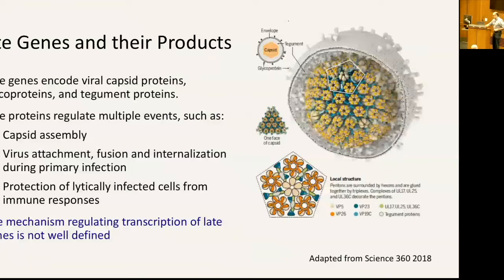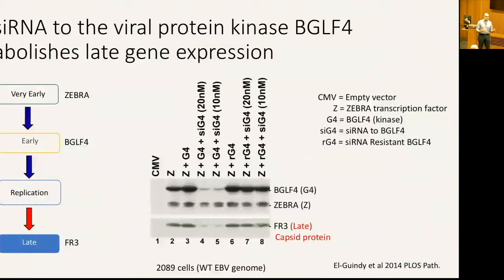About eight years ago, I became interested in a protein called BGLF4, which is a viral protein kinase. In this experiment, if you provide an empty vector, nothing happens — these are latent cells. If you provide Zebra, one of the transcription factors, it activates the lytic cycle, activates expression of BGLF4, and activates expression of FR3, a late protein that is part of the viral capsid.